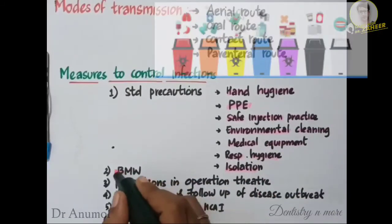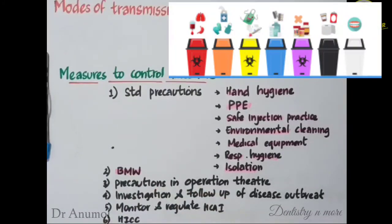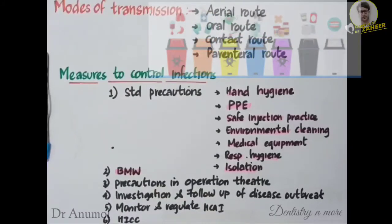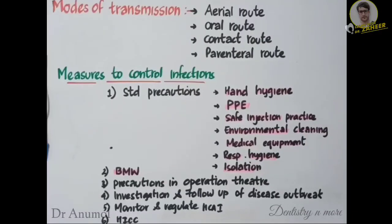Next is biomedical waste management. We should use color-coded bags for infectious, non-infectious, and general waste — separate color-coded bags for each category. We should use puncture-proof containers for handling sharps and needles. As a pre-treatment, we should autoclave infectious waste before disposing.